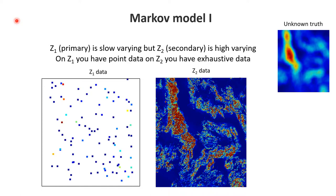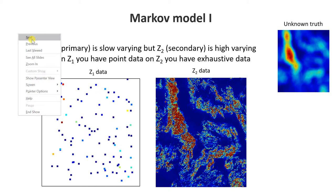Markov model 1 is where we simply swap the Z1 and Z2 variables. The Z1 variable is now slowly varying, but the Z2 variable is highly varying. So we have slowly varying point data, exhaustive secondary data that is highly varying, and we'd like to model this unknown truth. We have to be very careful applying Markov model 1 in reality — it only applies where Z1 is slowly varying and Z2 is highly varying, so we would not apply it to the porosity-geophysics case.